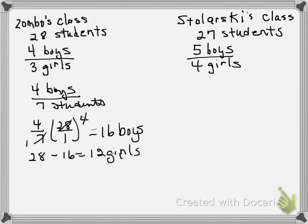Alright, let's do a similar thing for Stolarski's class. There are 5 boys to every 4 girls, so that means there are 5 boys for every 9 students.